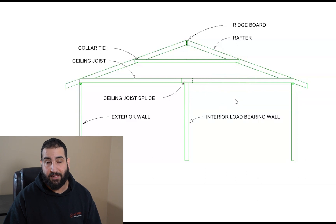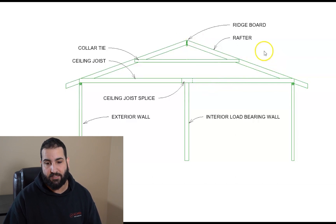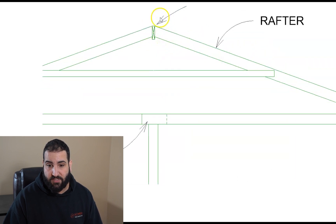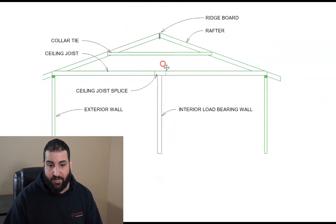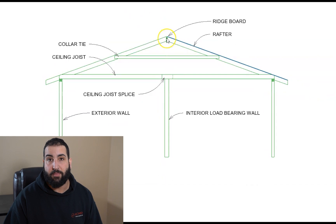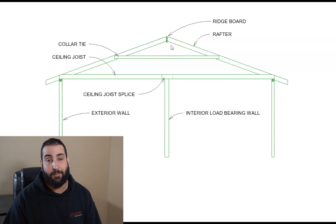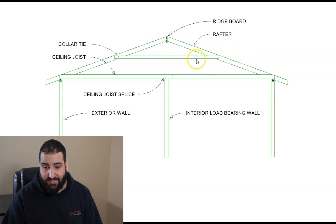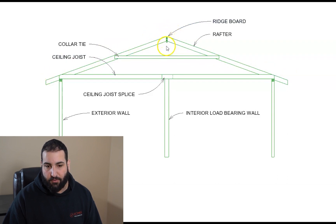Stick frame means that everything is made with dimensional lumber — you'll hear it called stick frame or wood frame; typical terminology here in Canada is stick framed. The roof starts with the ridge board. The ridge board, believe it or not, is not a load-bearing member. That's something a lot of people get confused on — they think the ridge board is load-bearing. However, that's a common misconception. The ridge board is only there as a framing member and it's only to frame the rafters into.